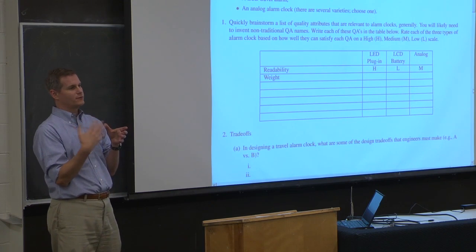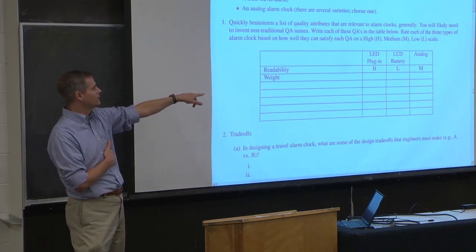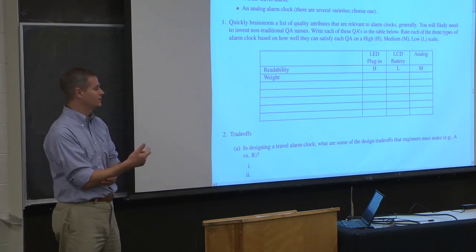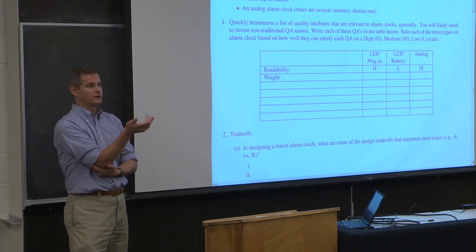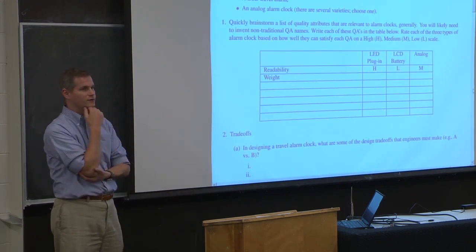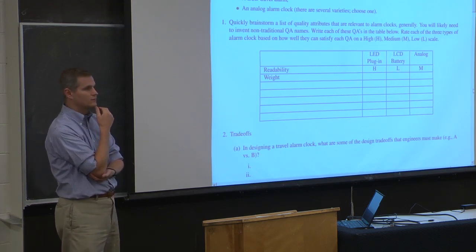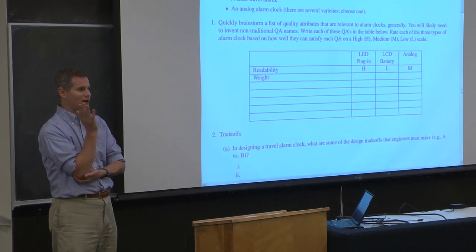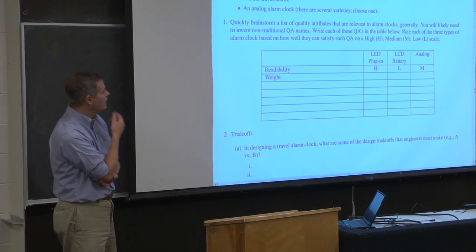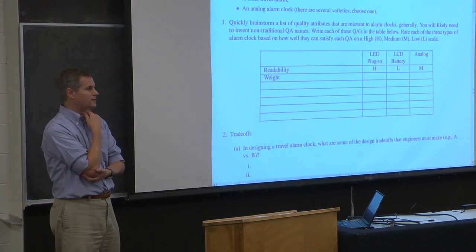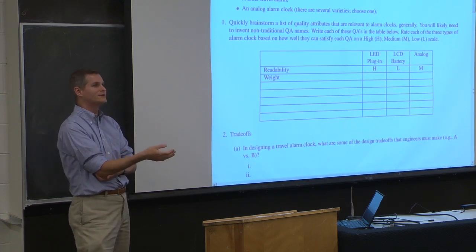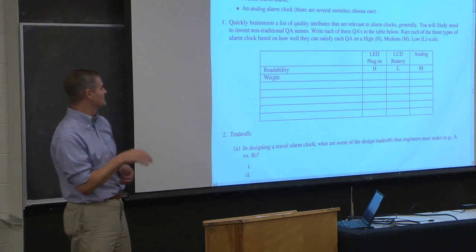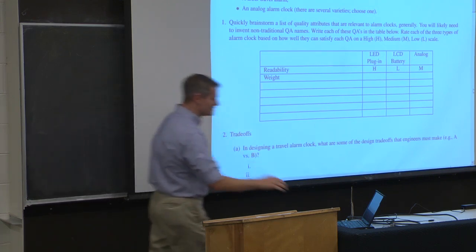The analog uses a mechanical bell. There's nothing that actually stops an LED plug-in or an LCD from having a mechanical bell, so let's get into that trade-off later. For power resilience — if the power goes out, how do each of these score? Generally, unless they have a battery, the LED goes off and blinks at you. The LCD battery one didn't even know it happened; on the other hand, the batteries can go dead, and that's bad too. The analog has a different problem: you need to remember to wind it every night, otherwise you don't wake up.